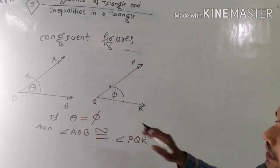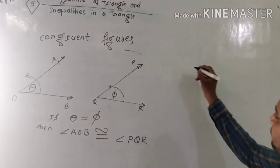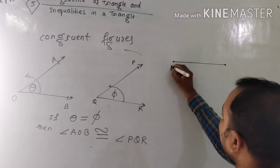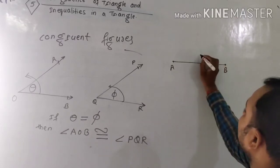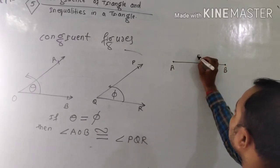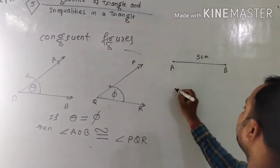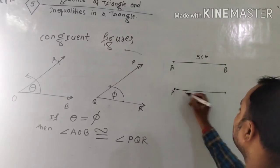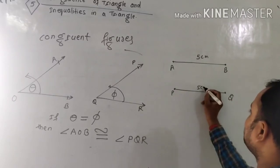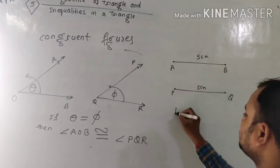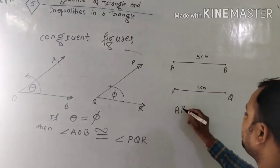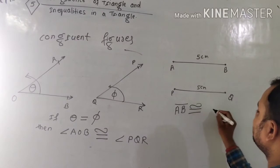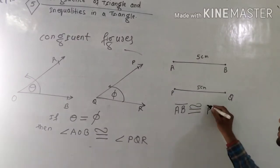These are congruent angles. If any line segment AB has a measurement of 5 cm, and another line segment PQ also has a measurement of 5 cm, then line segment AB is congruent to line segment PQ.